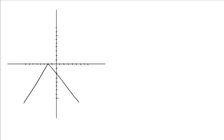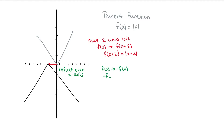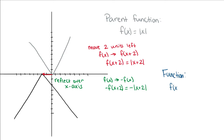Given a graph, let us identify the parent function and write the transformed function. We have an upside-down V shape, which is our absolute value function. So the parent function is f(x) = |x|. This function is moved 2 units to the left, so we go from f(x) to f(x + 2) — when we move left, we add 2. And then it's reflected over the x-axis, so it becomes negative f(x). Our transformed function is f(x) = -|x + 2|.